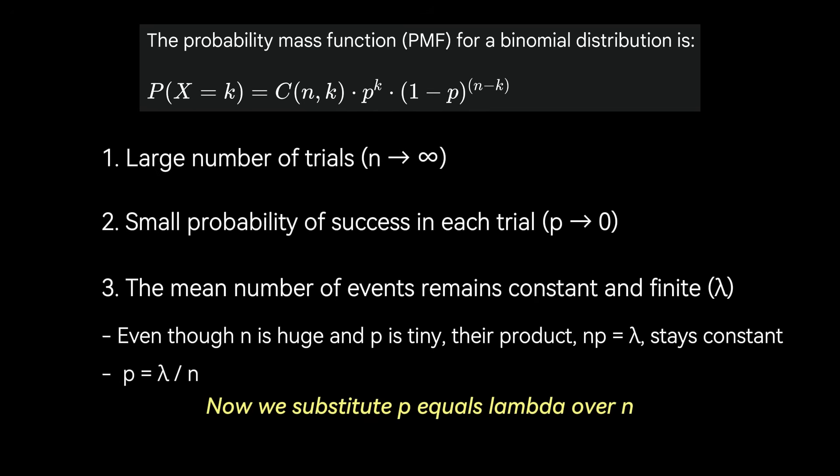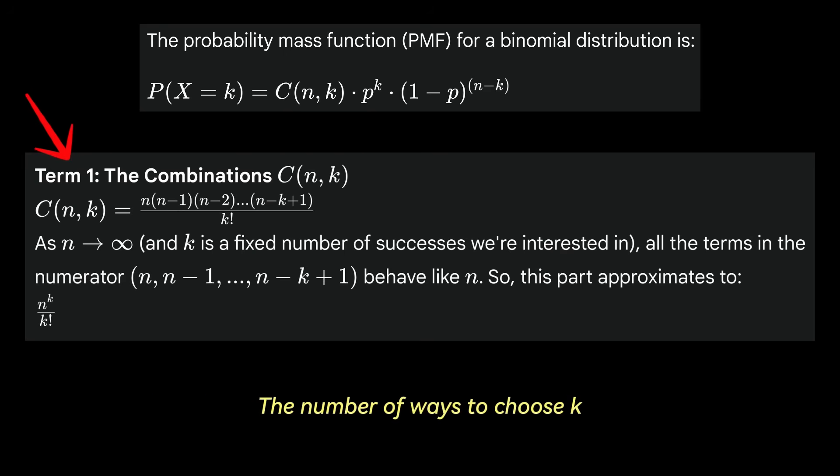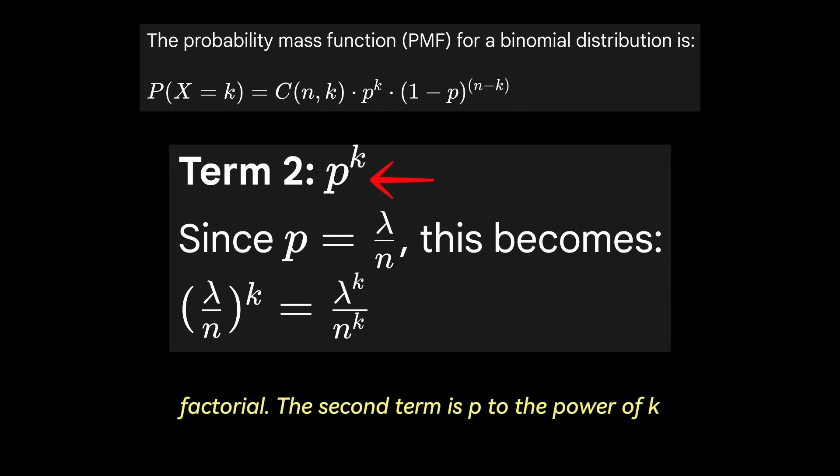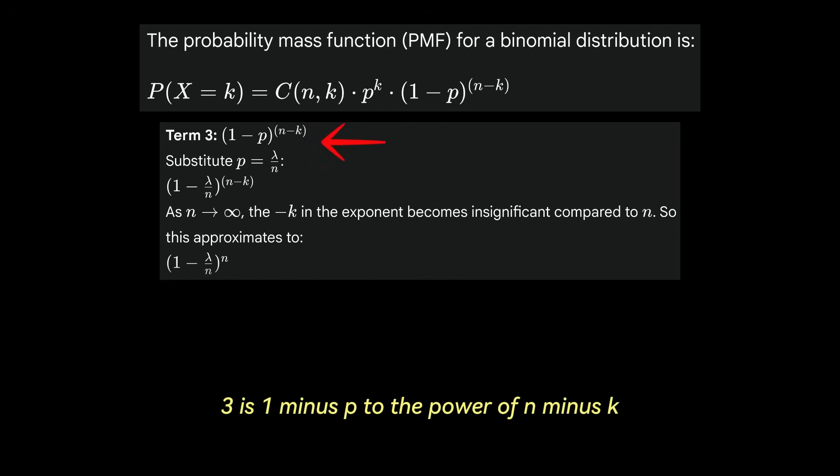Now we substitute p equals lambda over n into the binomial formula and let's see what happens when n gets infinitely large. There's a little bit of algebraic manipulation and calculus, specifically limits, so let's start with the term 1 or the combinations term. The number of ways to choose k successes from n trials can be given by the following. As n approaches infinity, all the terms in the numerator n, n minus 1, n minus k plus 1 behave like n. So this part approximates to n to the power of k over k factorial. The second term is p to the power of k. Remember that p equals lambda over n, so this becomes lambda to the k over n to the k. Term 3 is 1 minus p to the power of n minus k. We substitute p equals lambda over n, and we get 1 minus lambda over n all to the power of n minus k.